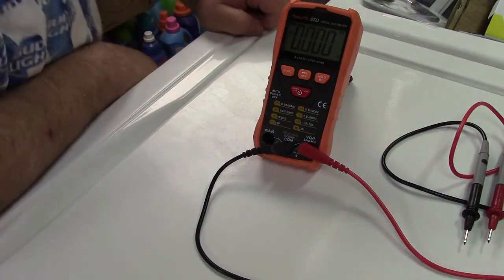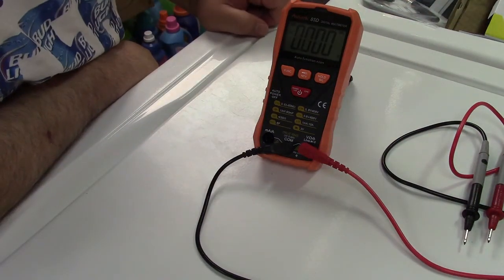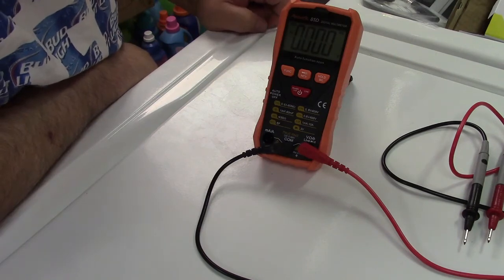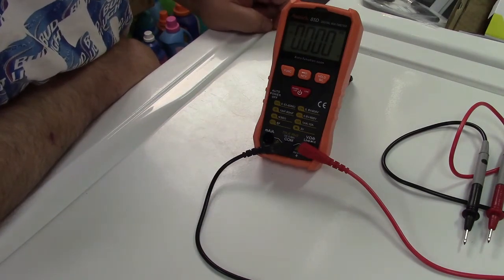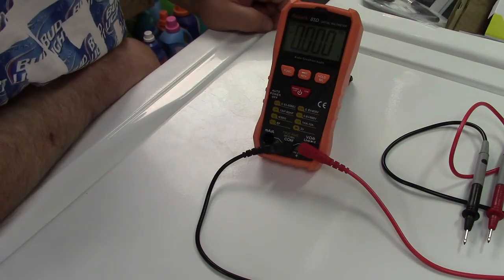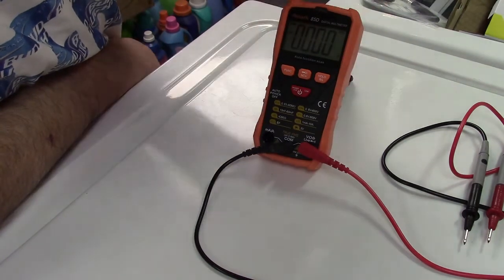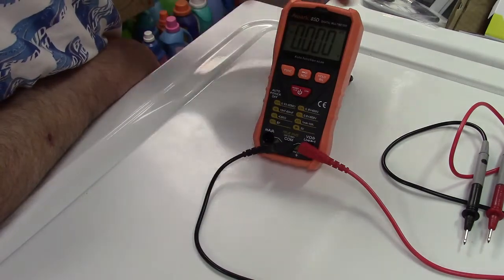You can, of course, set this to the ohms scale and test resistance of resistors. This can test diodes and even capacitors as well.